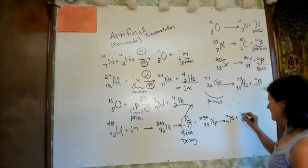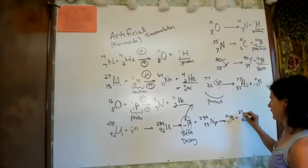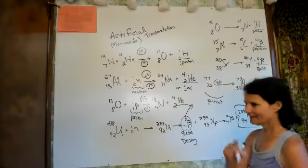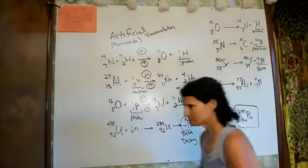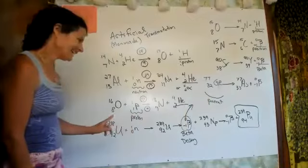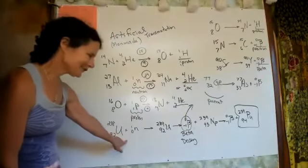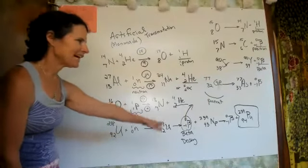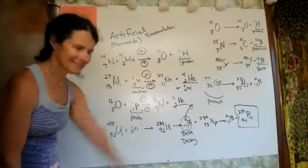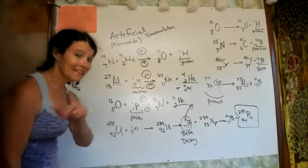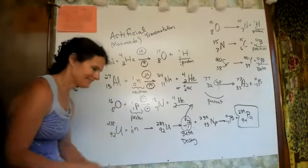The process forms number 94 — plutonium. Neutron absorbed, became uranium-239, went through two successive beta decays, and they had plutonium. This is what goes on at Hanford.